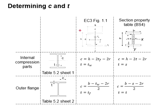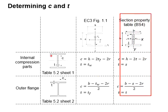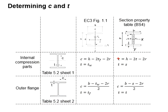it is noted that you need to get the section property from a table, which is as per given by BS4. The set of symbols used is slightly different than Eurocode. When you use the table, always refer to Table 5.2 of the Eurocode for you to work out the c and t.